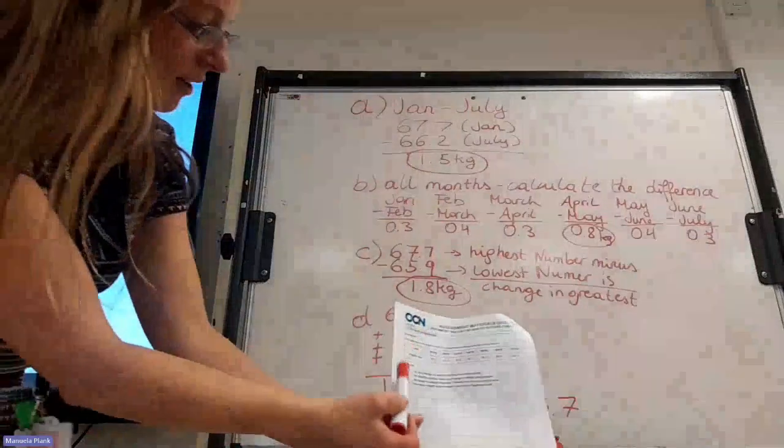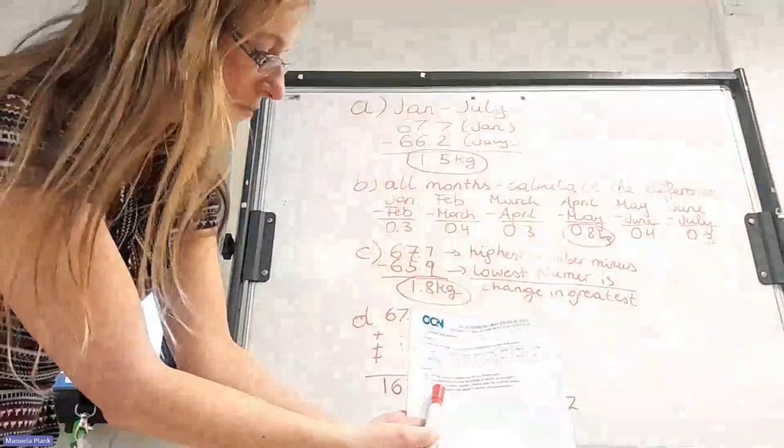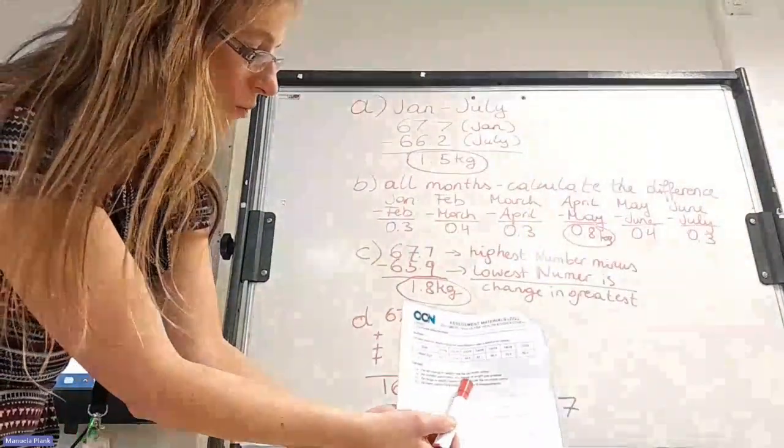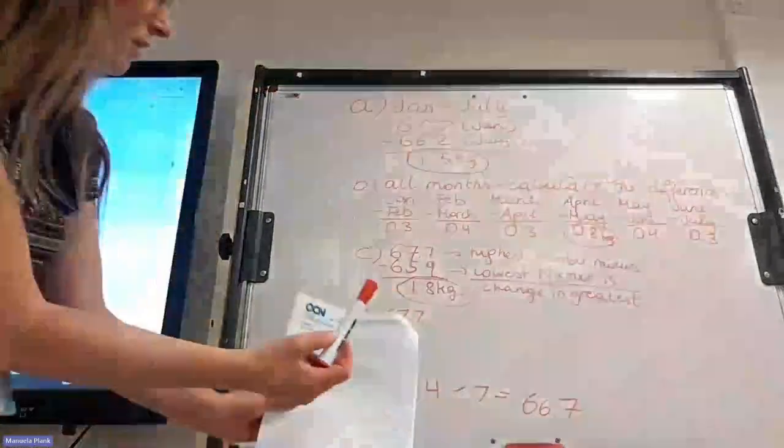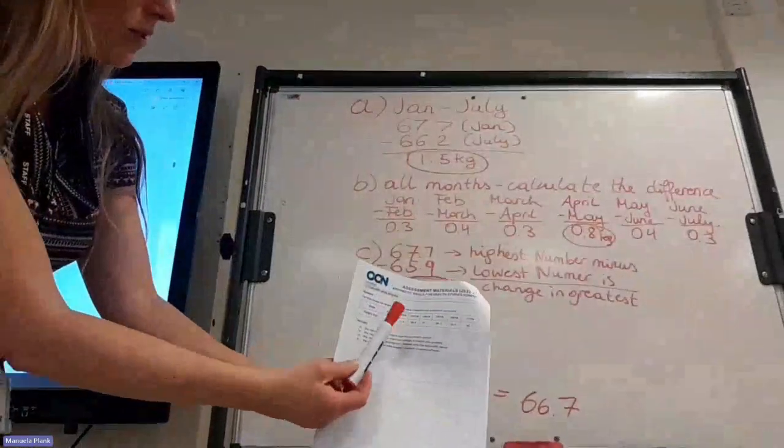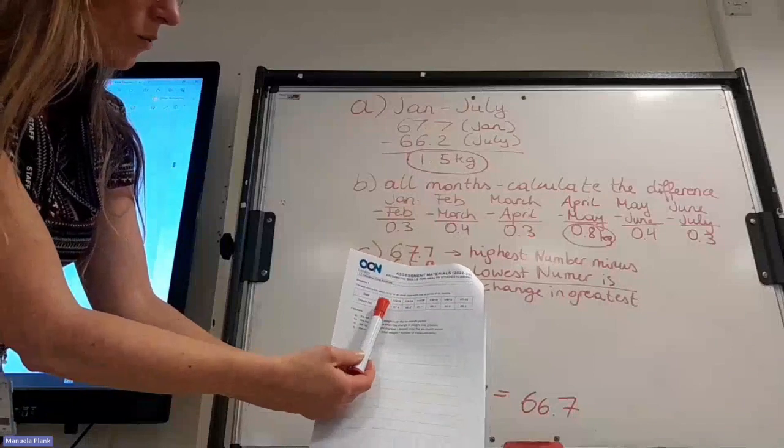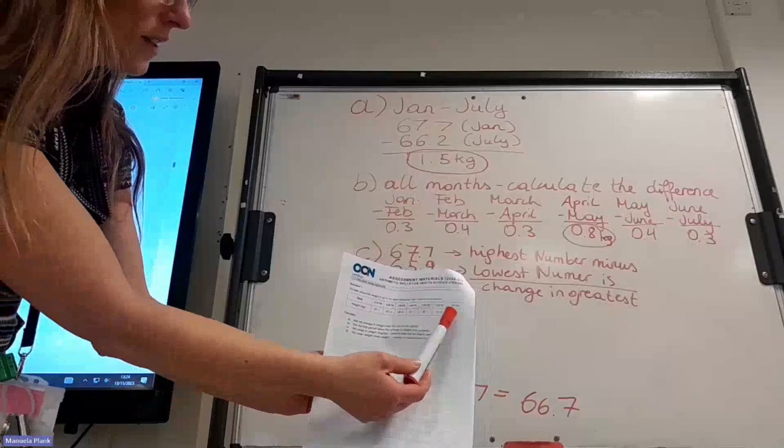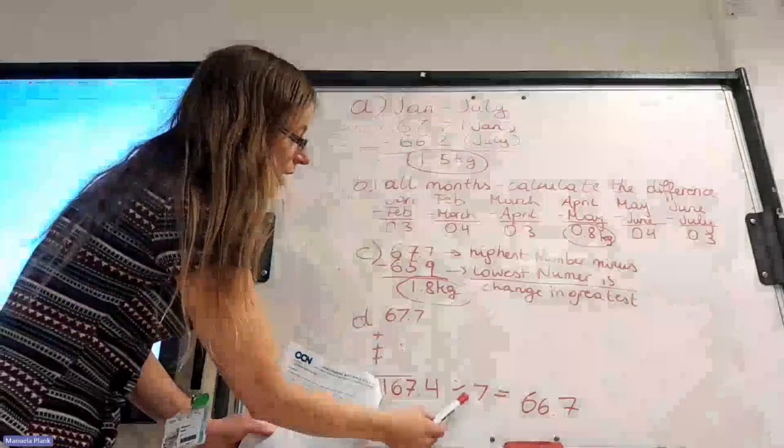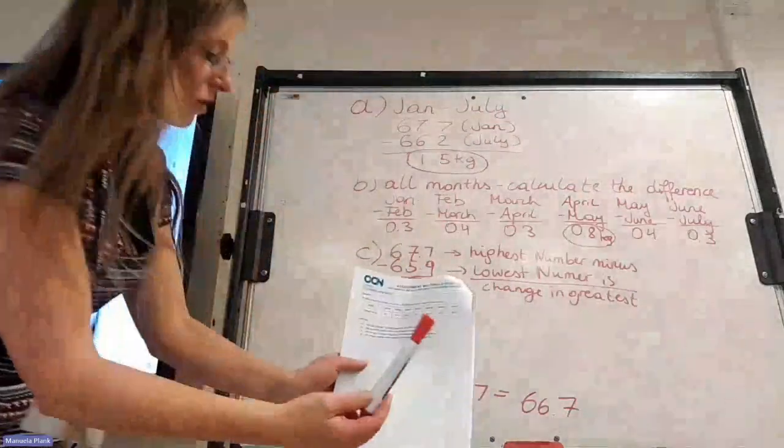Then we have a look at number D. D says the mean weight. So the total weight divided by the number of measurements. So we have how many measurements? January, February, March, and so on. How many numbers? 1, 2, 3, 4, 5, 6, 7. So we have seven numbers. We know we have to divide by seven.